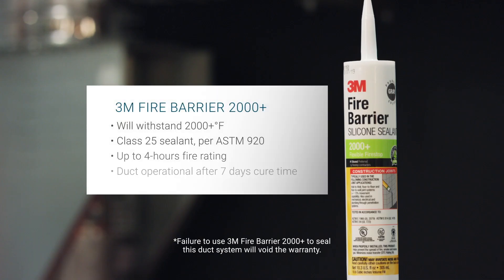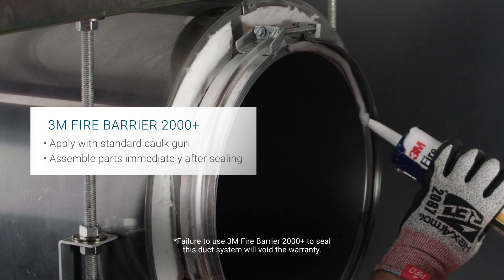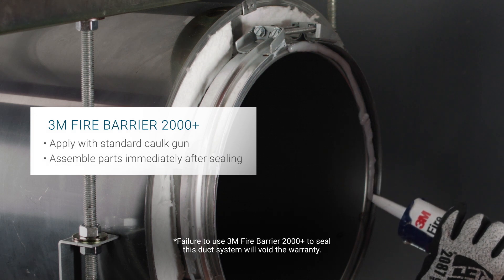Per the listing, 3M Fire Barrier 2000 Plus is the only sealant that may be used to seal this duct system. Sections must be clean, dry, and frost-free before sealing.